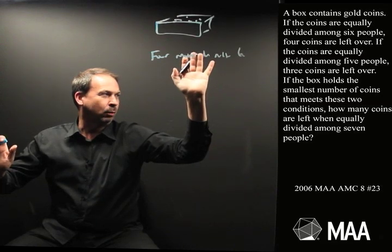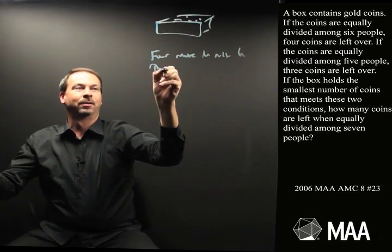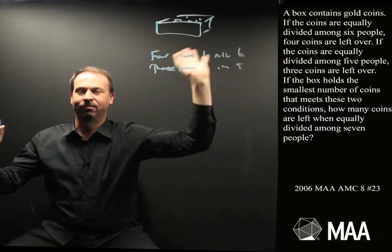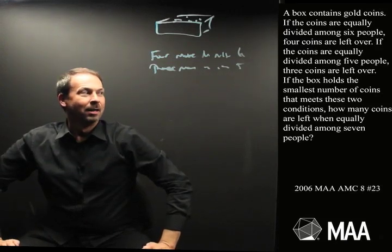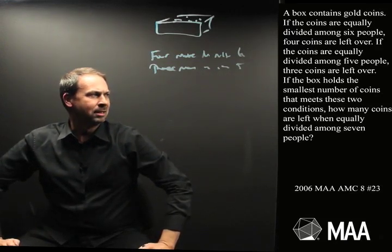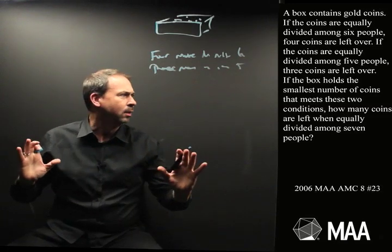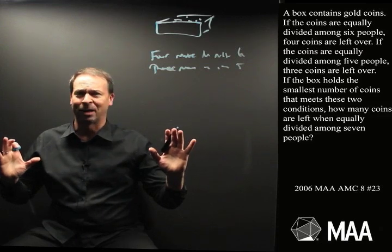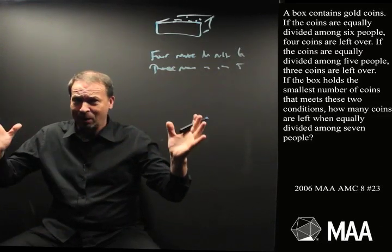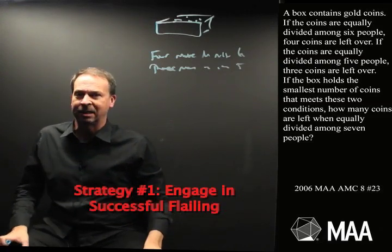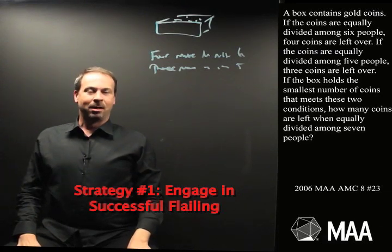Great. If the coins are equally divided among five people, three are left over. So it must be three more than a multiple of five. And then if the box holds the smallest number of coins that meet these two conditions, how many coins are left over when equally divided among seven? Well, I guess maybe we could work out the number of coins in the box and then divide by seven to see the answer. I guess I'm really doing strategy number one, which is engage in successful flailing. I kind of know what I have to do, I just have to figure out how to get my way through it.